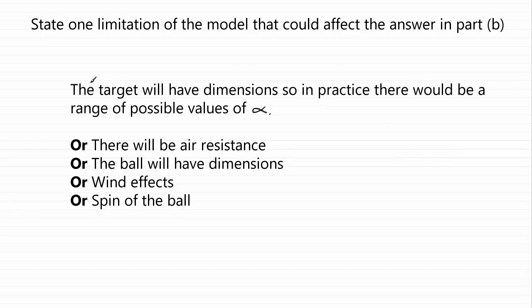And that is that the target will have dimensions. So in practice, there would be a range of possible values of angle alpha. That's because, remember, the ball was projected, say, from point A, it travelled along to a target, which was T.